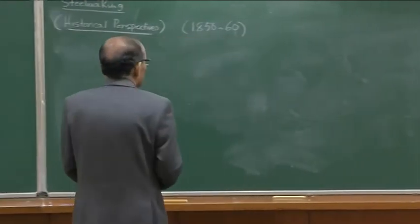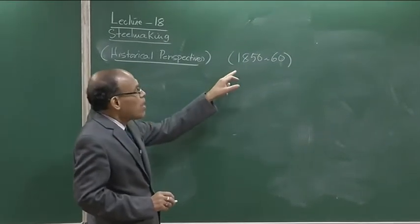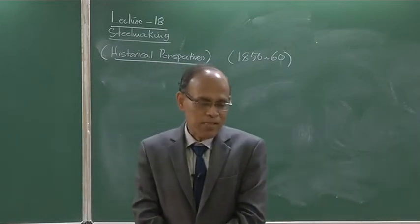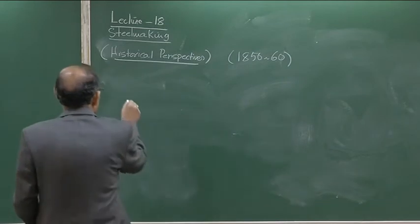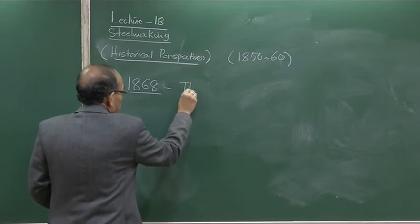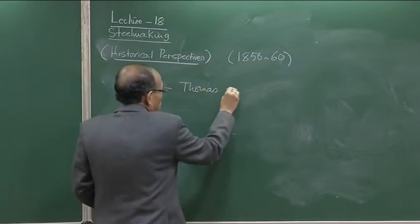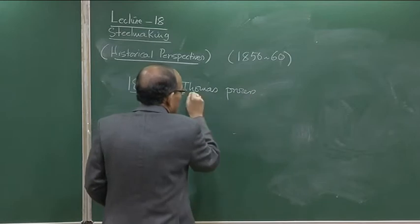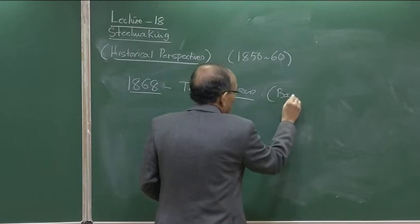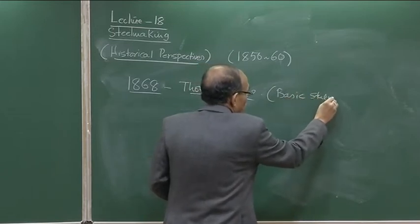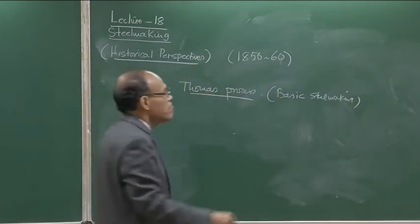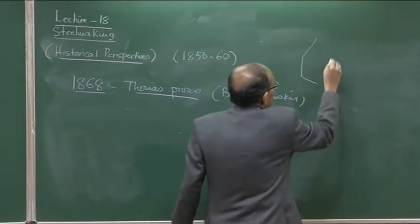Around the same time when Bessemer introduced his process, in about 1868 we had the basic Bessemer process, which is also known as the Thomas process. It is a modification of the original Bessemer process which allows for basic steel making. The lining material can be changed, but it is essentially the same bottom-blown pneumatic steel making.